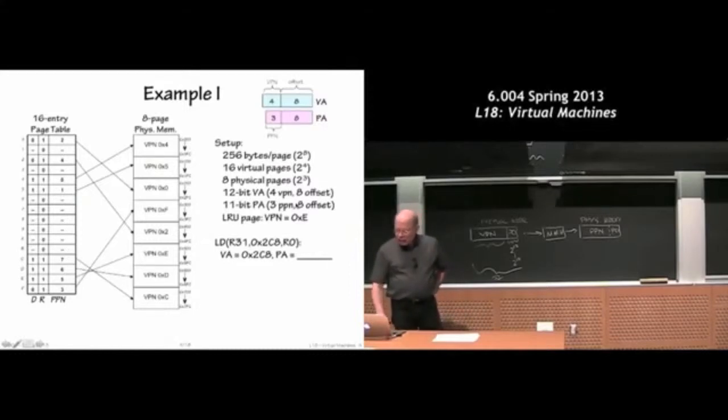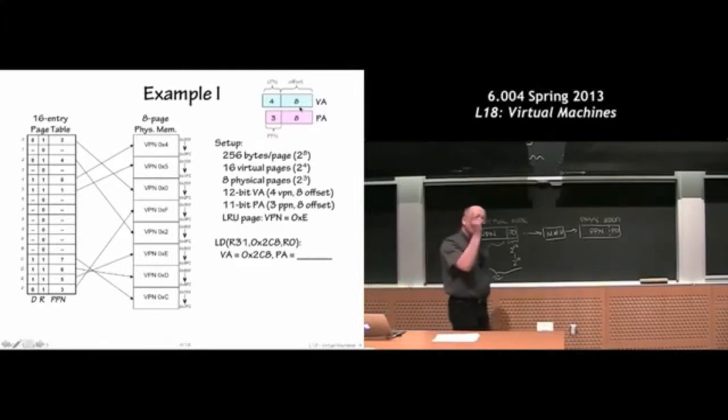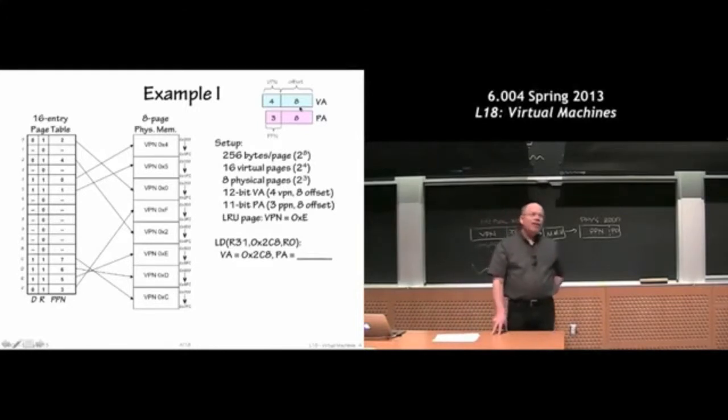Let's go through some quick examples. So we've arranged a very small memory system here. We have pages that have 8 bits of the address being used as the page offset. So how big is our page? 2 to the 8th bytes, 256 bytes.